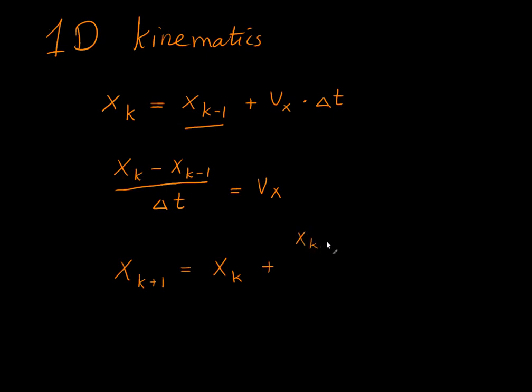That would again be x_K minus x_K-1 divided by the change in time between these two. So it's between K and K minus 1 and then multiply it with the time between K plus 1 and K.